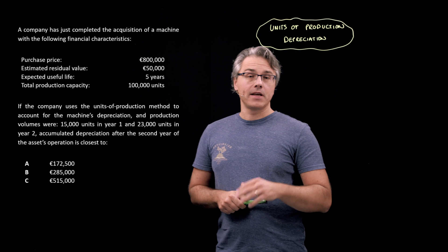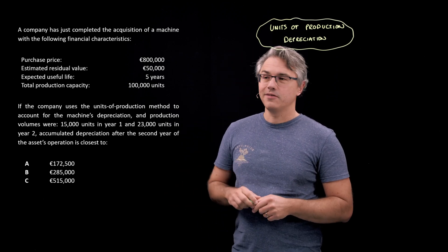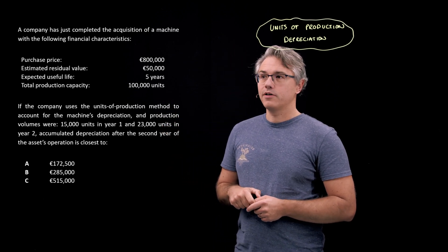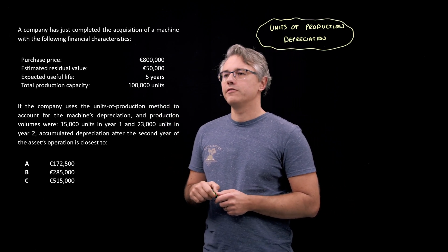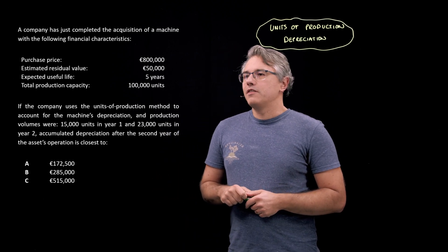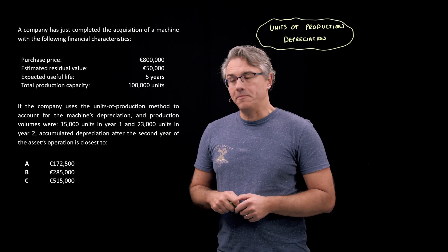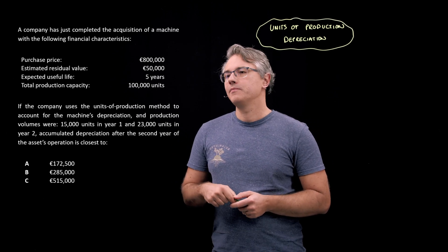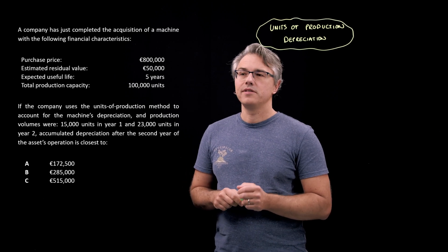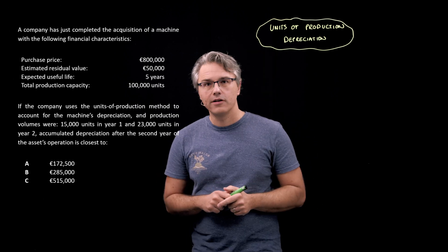This time around, in contrast to the previous question based on the same scenario, we are going to utilize the information on production capacity — those 100,000 units. If the company uses the units of production method to account for the machine's depreciation, and production volumes were 15,000 units in year one and 23,000 units in year two, accumulated depreciation after the second year of the asset's operation is closest to — and three options follow.